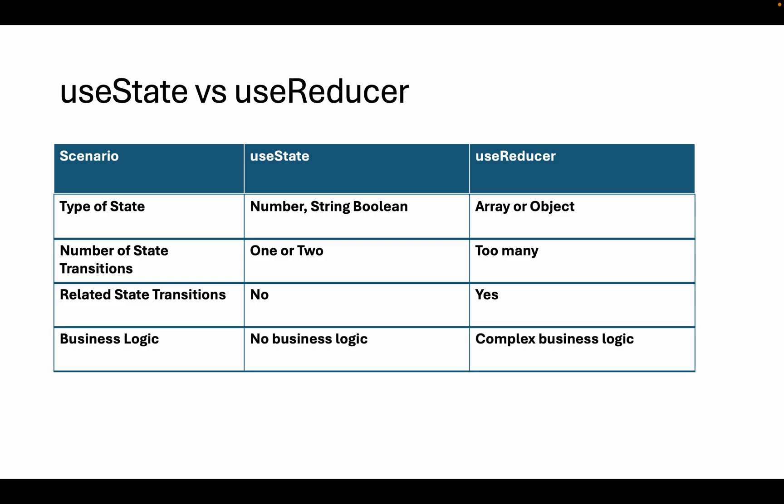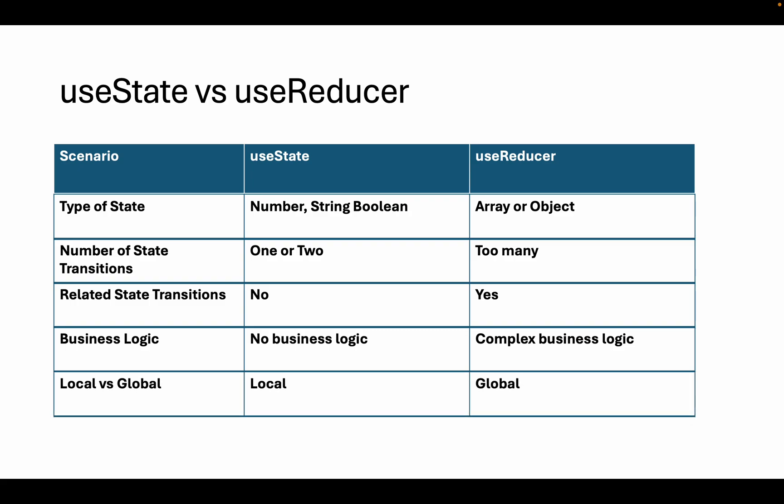Thirdly, if there is any business logic involved in your state — for example you have some sort of value and you are going to update the state value based on some business logic — in that kind of case it's better to go with the useReducer hook as well.